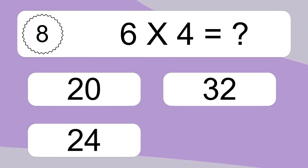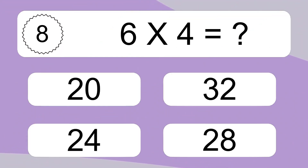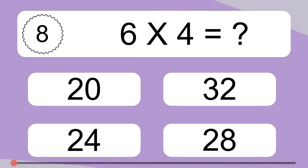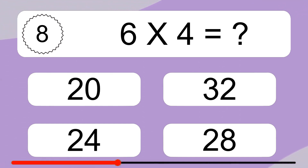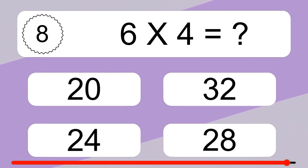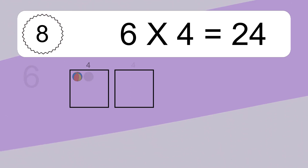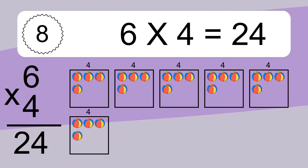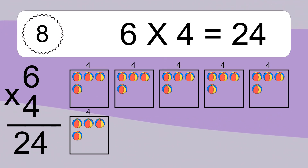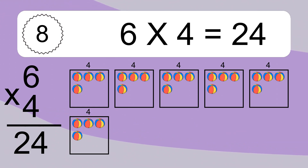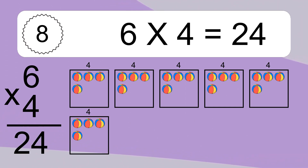6 times 4 equals what? 6 times 4 equals 24. We have 6 boxes and each box has 4 colorful balls inside. If you count all the balls in all the boxes together, you will have 6 times 4 balls. This equals 24 balls.